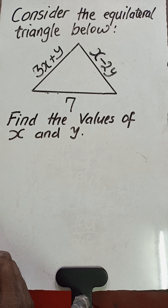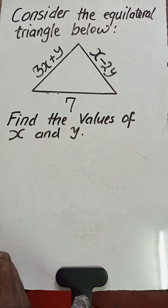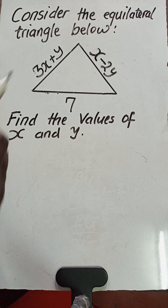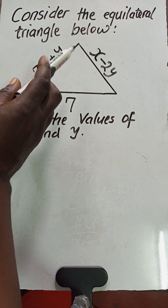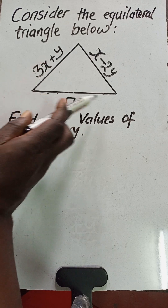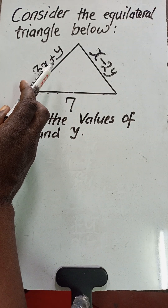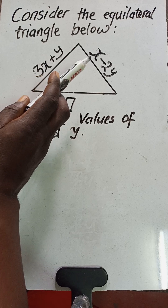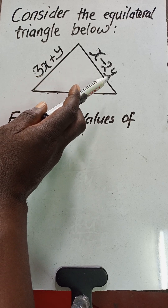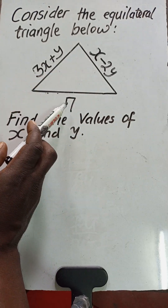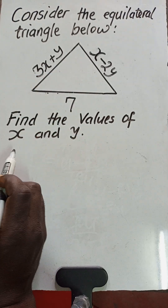In this question, we have to exploit the property of an equilateral triangle. We are told that this is an equilateral triangle with sides 3x plus y, x minus 2y, and 7.